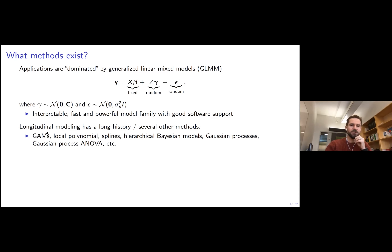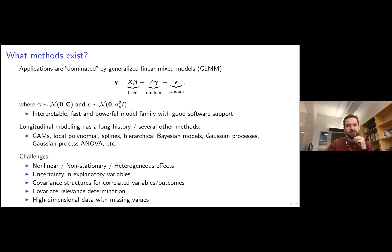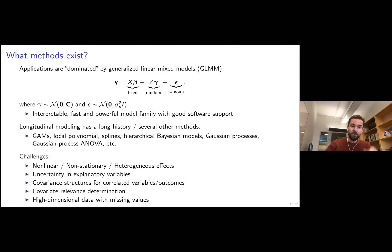The longitudinal modeling field has a very long history with many different methods — generalized additive models, splines, different types of Bayesian hierarchical models, Gaussian processes, and so on. But there are still challenges: how to model non-linear, non-stationary or heterogeneous effects across individuals; how to account for uncertainty in the explanatory variables; how to determine the relevance of different covariates x; and how to model high-dimensional data with possibly many missing values.